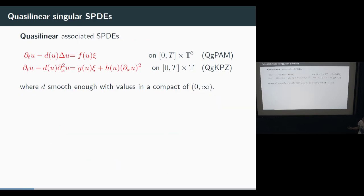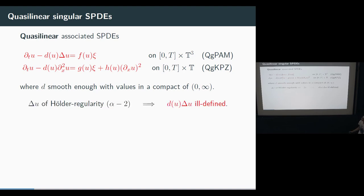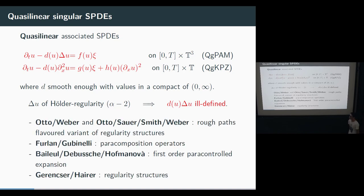I'm dealing with a quasi-linear equation, that is, I don't have a linear leading term. D is a smooth enough function with values in a compact set, to ensure that this operator is uniformly elliptic. Since the solution U is of the same regularity as the noise, we have a singularity in the leading order term — this term is ill-defined.